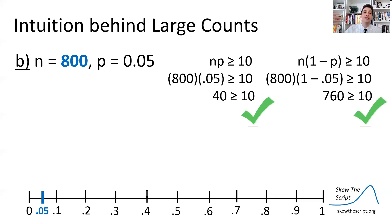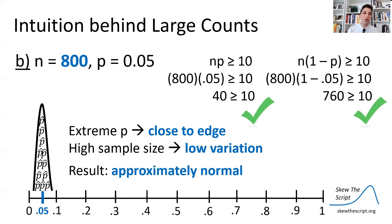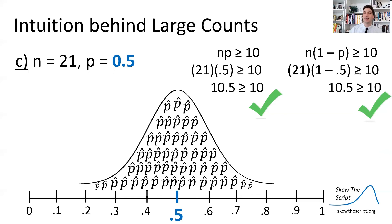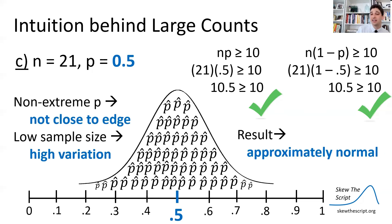Now imagine we have the same extreme proportion of 0.05, but our sample size is 800. Our variation shrinks because we're getting so many people per poll, giving very precise estimates. We don't get cut off by that zero bound, so the result is an approximately normal distribution. And we can see that the large counts conditions are satisfied: 800 × 0.05 = 40, which is greater than 10. Finally, imagine a moderate sample size of 21 with a proportion of 0.5 — right in the middle. We'll see a lot of sampling spread, but because we're not close to the edge, the distribution is approximately normal, and both large counts conditions are satisfied: 21 × 0.5 = 10.5 ≥ 10.